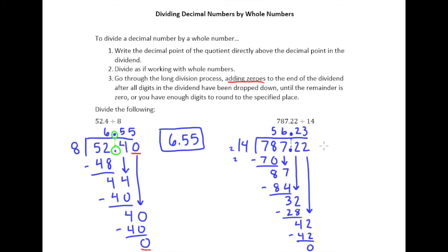So here it wasn't necessary to continue to add 0s and drop them down. Because our remainder is 0 now. But let's also understand that if this remainder wasn't 0, we would go ahead and add 0s here and continue the long division process. So our answer is 56.23.